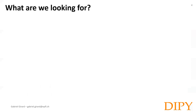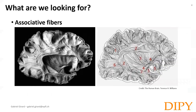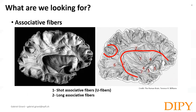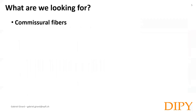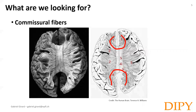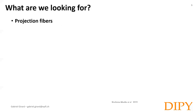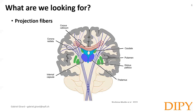With diffusion tractography, we want to estimate the trajectory of white matter pathways. They can be divided into three groups. The first is the associative fibers — they connect the gray matter cortical areas within each hemisphere, like short U-shaped fibers or long fibers connecting the frontal lobe to the temporal lobe. Then we have the commissural fibers, which are white matter pathways connecting the two hemispheres. Finally, we have the projection fibers, connecting the cortical gray matter to the subcortical gray matter, the brain stem, and spinal cord.